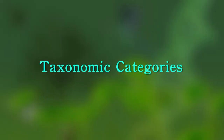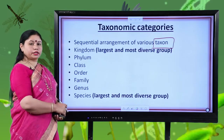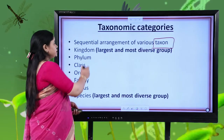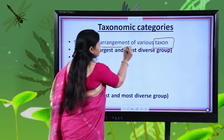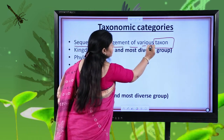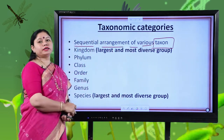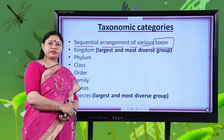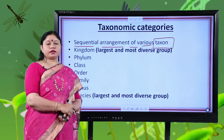Let us begin with the taxonomic categories. Taxonomic categories are actually a sequential arrangement of various taxons. Taxon refers to a category or rank.